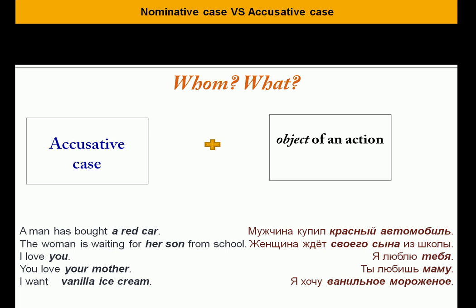Now let's talk about the accusative case. The accusative case is used to denote the object of an action — not the subject as in the nominative, but the object of an action. For example, 'I bought a car' — я купил автомобиль. Мужчина купил красный автомобиль — a man has bought a red car. Женщина ждет своего сына из школы — the woman is waiting for her son from school. Я люблю тебя — I love you. Ты любишь маму — you love your mother. Я хочу ванильное мороженое — I want vanilla ice cream.